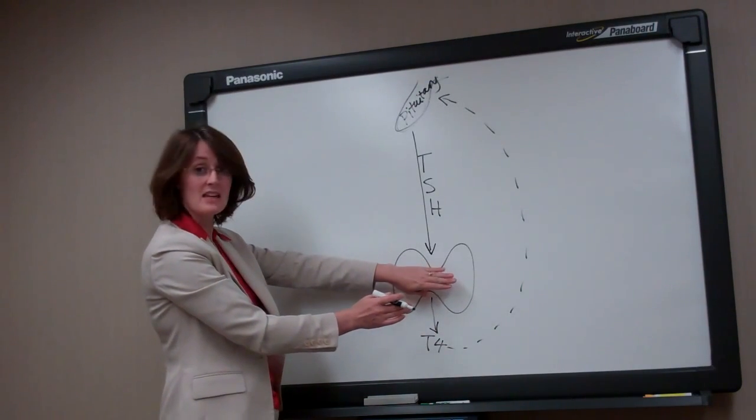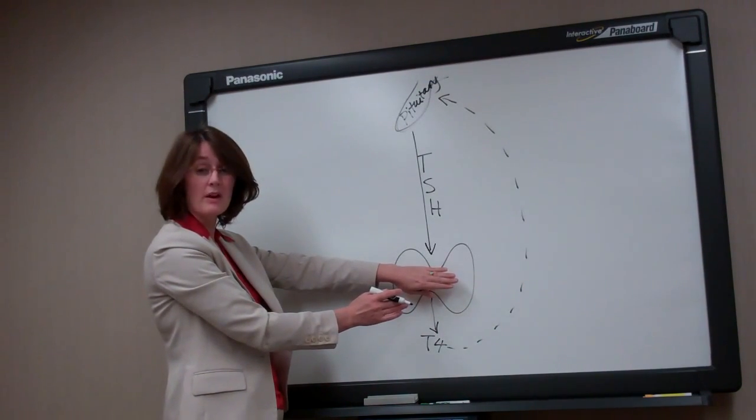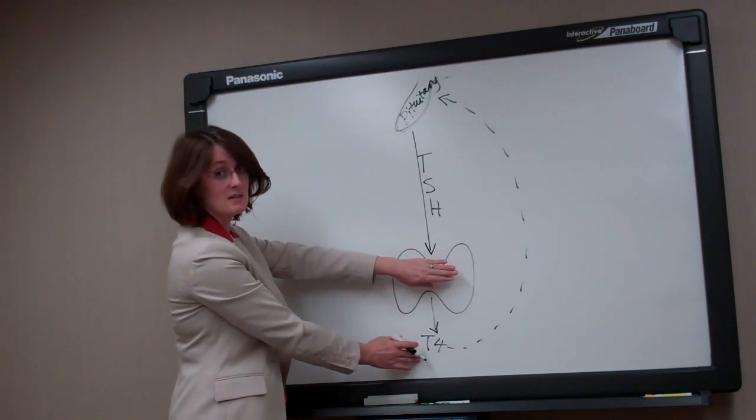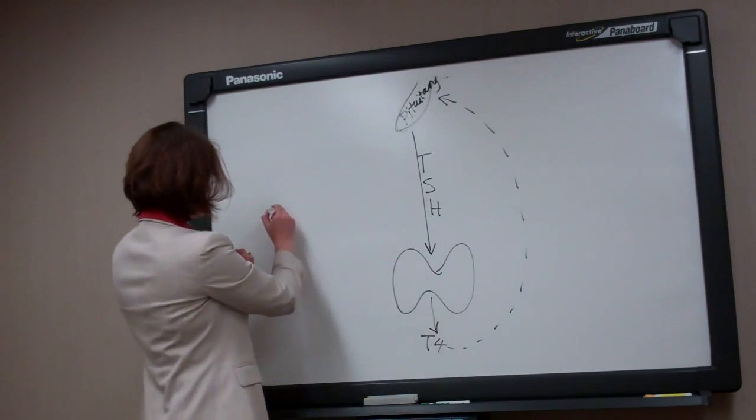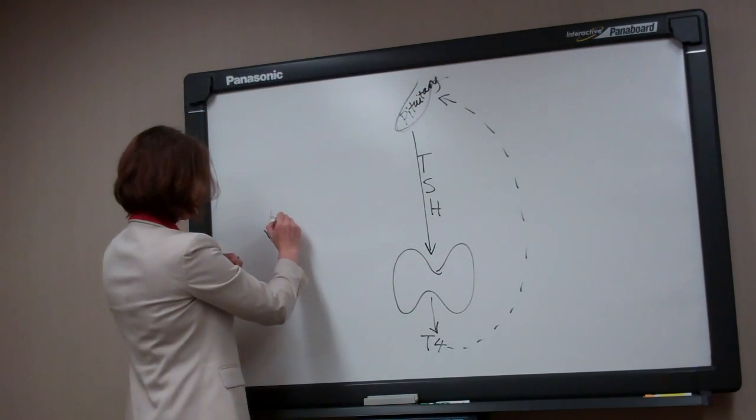The thyroid gland gets sick, we call that primary hypothyroidism. If the thyroid gland is sick, it doesn't make enough thyroid hormone, so we get a low T4 level.